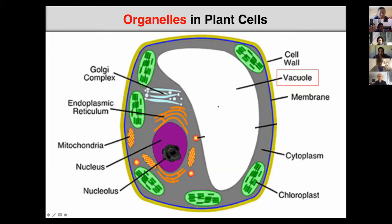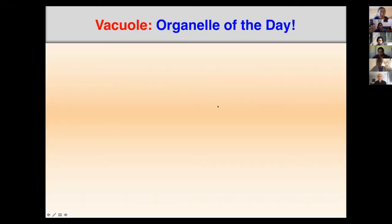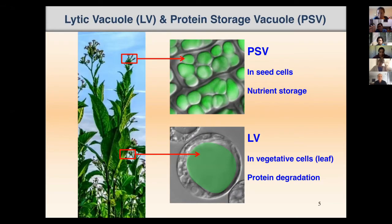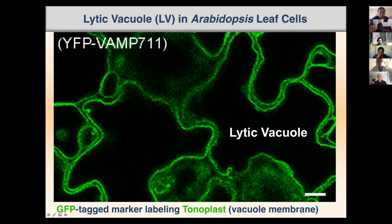The organelle today is the vacuole. What we know about the vacuole so far: plant cells can have two different types of vacuoles. In seed cells, there is the so-called protein storage vacuole, which stores protein. In vegetative cells, the vacuole functions for other functions. For example, in leaf cells, there is a big central vacuole.